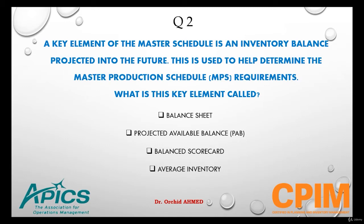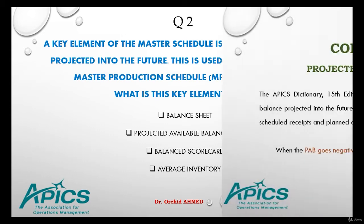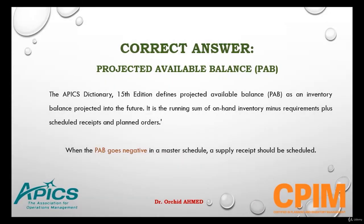Options are: balance sheet, projected available balance, balanced scorecard, or average inventory. The right answer will be projected available balance.